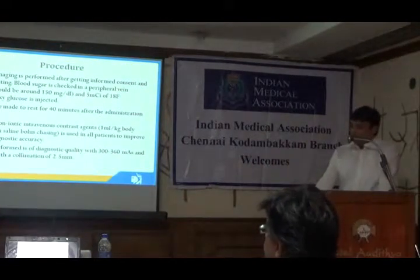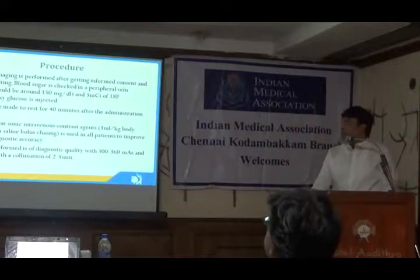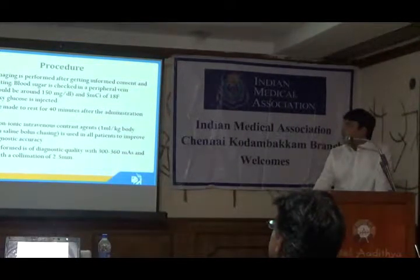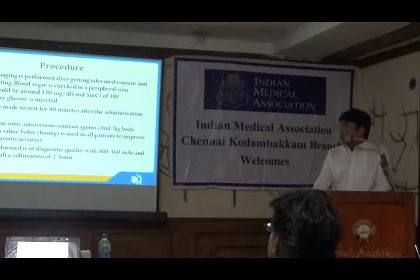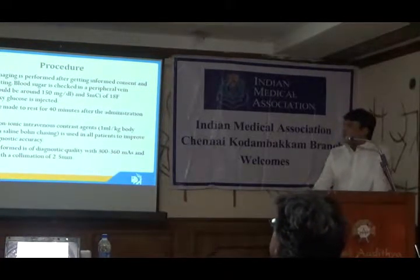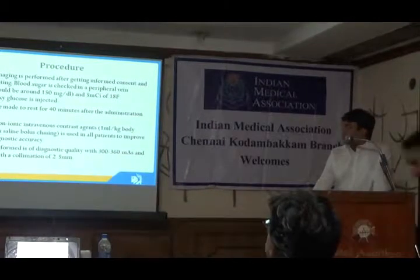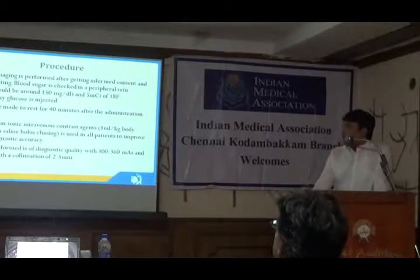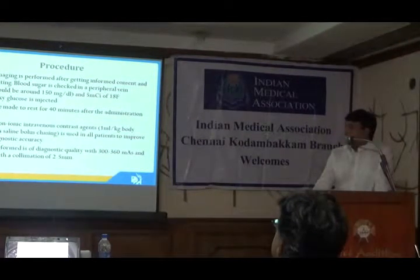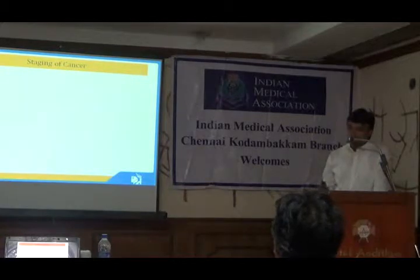For the PET-CT procedure, we get an informed consent and require the patient to fast for 6 hours. A blood sugar of about 100 to 150 is required. We inject 5 mCi of 18-fluorodeoxyglucose — this is the nuclear medicine tracer, FDG. The patient is made to rest for 40 minutes, then taken for the scan. We give both oral and IV contrast, do a full-body CT, acquire the PET, and then fuse the PET and CT for evaluation.